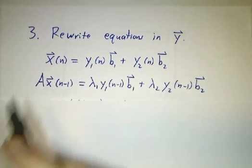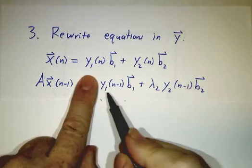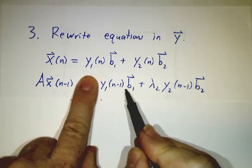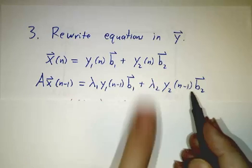That's supposed to be equal to A times x at time n minus 1. But x at time n minus 1 is y1 at time n minus 1 times b1 plus y2 times n minus 1 times b2. Then we multiply by A.